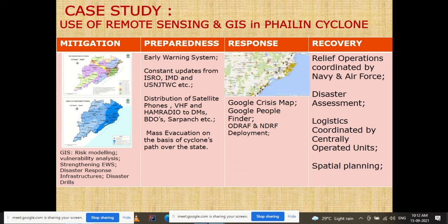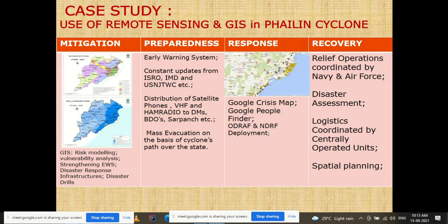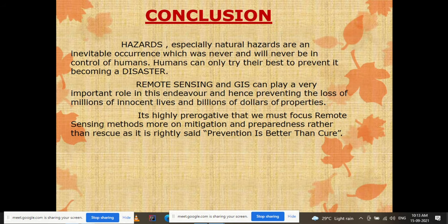In the response phase, a Google Crisis Map was prepared with the help of remote sensing and GIS, along with Google People Finder, ODRF, and NDRF deployment. In the recovery phase, remote sensing and GIS helped in relief operations coordinated by the Navy and Air Force, logistic coordination by centrally operated units, and spatial planning. This case study demonstrates how remote sensing and GIS provided exact time, location, date, and cyclone characteristics day by day, and helped at every phase of the disaster.